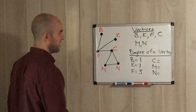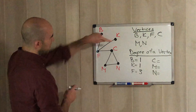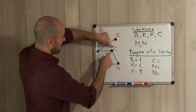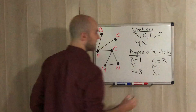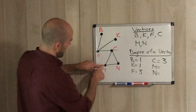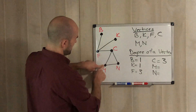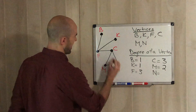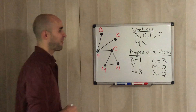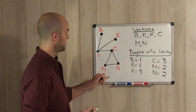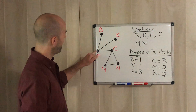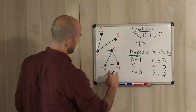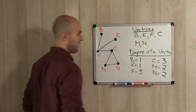Looking at C: C connects to F, C connects to M, and C connects to N, so the degree of C is 3. For M: M connects to C and M connects to N, so the degree of M is 2. For N: N connects to M and N connects to C, so the degree of N is 2. It's just counting how many edges come from each vertex.